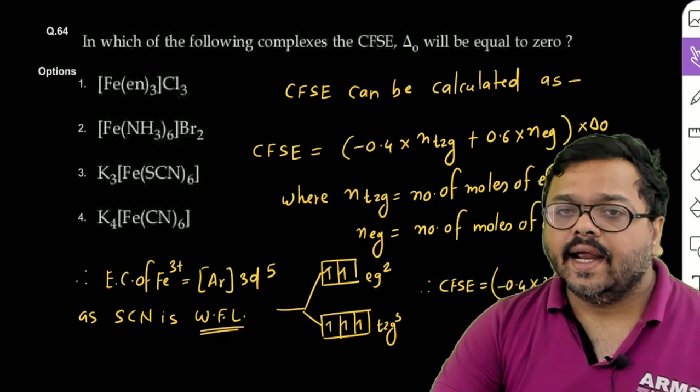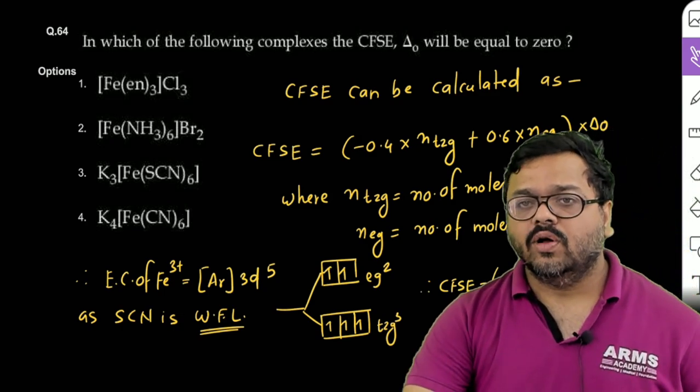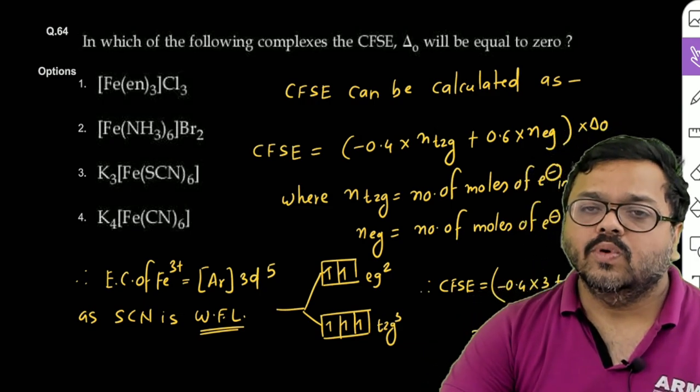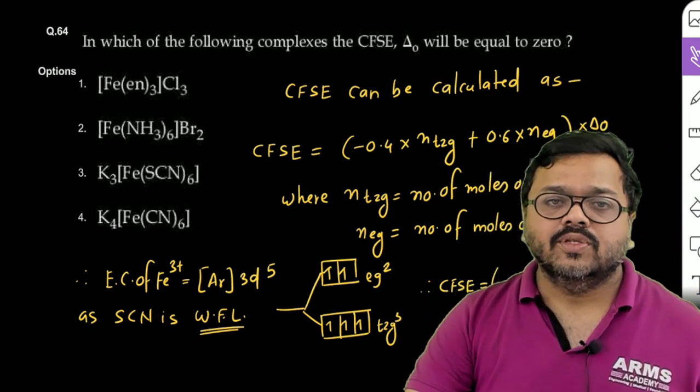Where NT2G is number of moles of electrons in T2G orbital and EG is number of moles of electrons in EG orbitals. So agar aapne third option dekha,